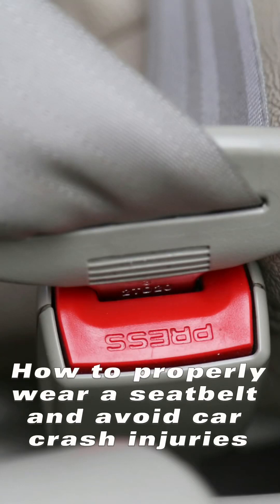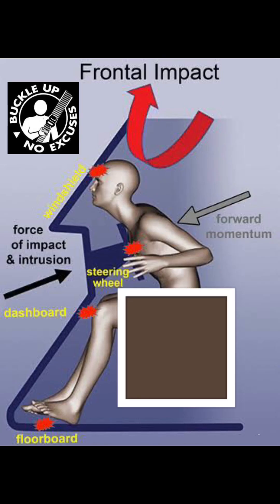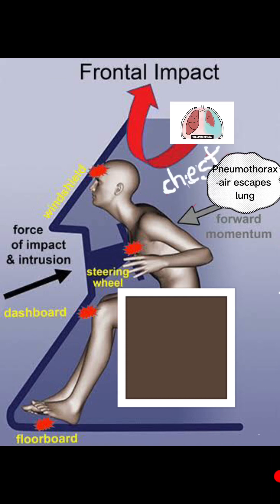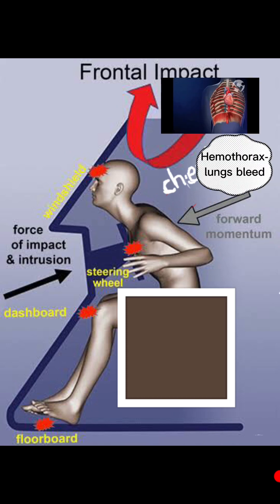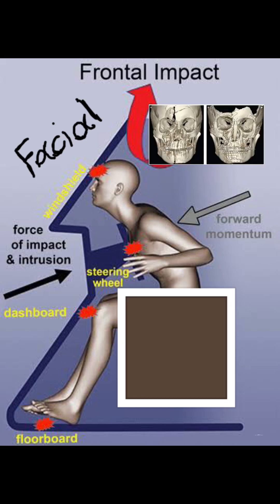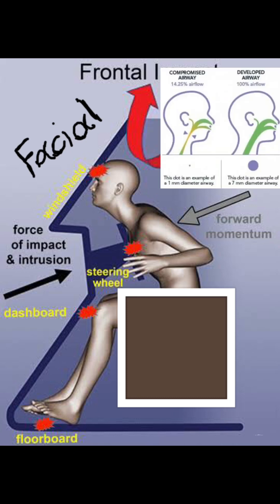How to properly wear a seat belt and avoid car crash injuries. In an unrestrained driver, chest injuries from the steering wheel include rib fractures, pneumothorax, and hemothorax, which can lead to death. Facial trauma can cause craniofacial fractures, leading to a compromised airway and death.